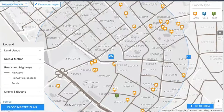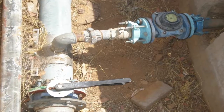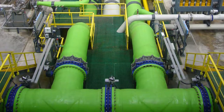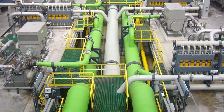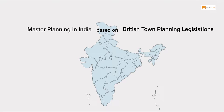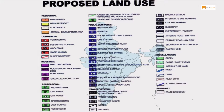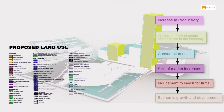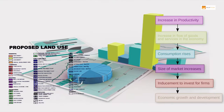For instance, before building water infrastructure, a city's master plan would develop a long-term plan to modernize water systems. In India, master planning was based on British town planning legislation. The master plan forms the foundation for government planning of the city's economic development.